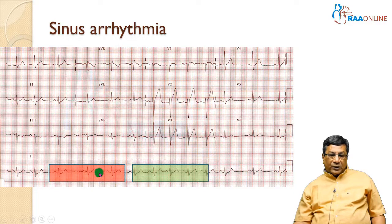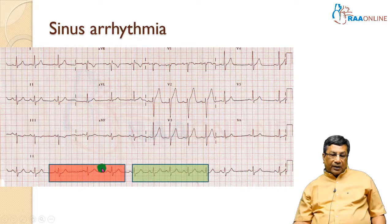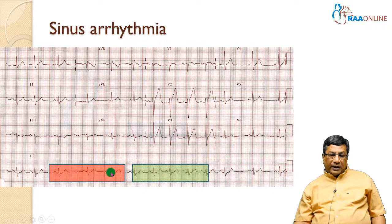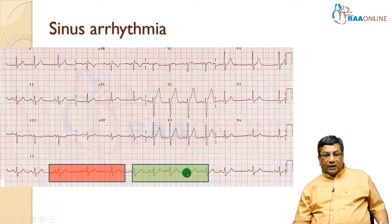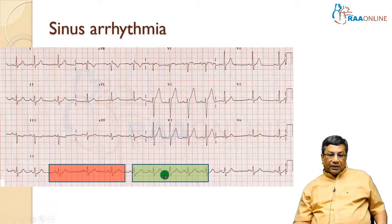If you relate this to respiration — if the fast heart rate is happening during inspiration and slower heart rate during expiration — it is respiratory sinus arrhythmia, most common in children. Whereas in adults, if it is happening spontaneously without any respiratory involvement, then it is non-phasic or non-respiratory sinus arrhythmia, which can happen due to coronary heart disease, sick sinus syndrome, or digoxin toxicity.